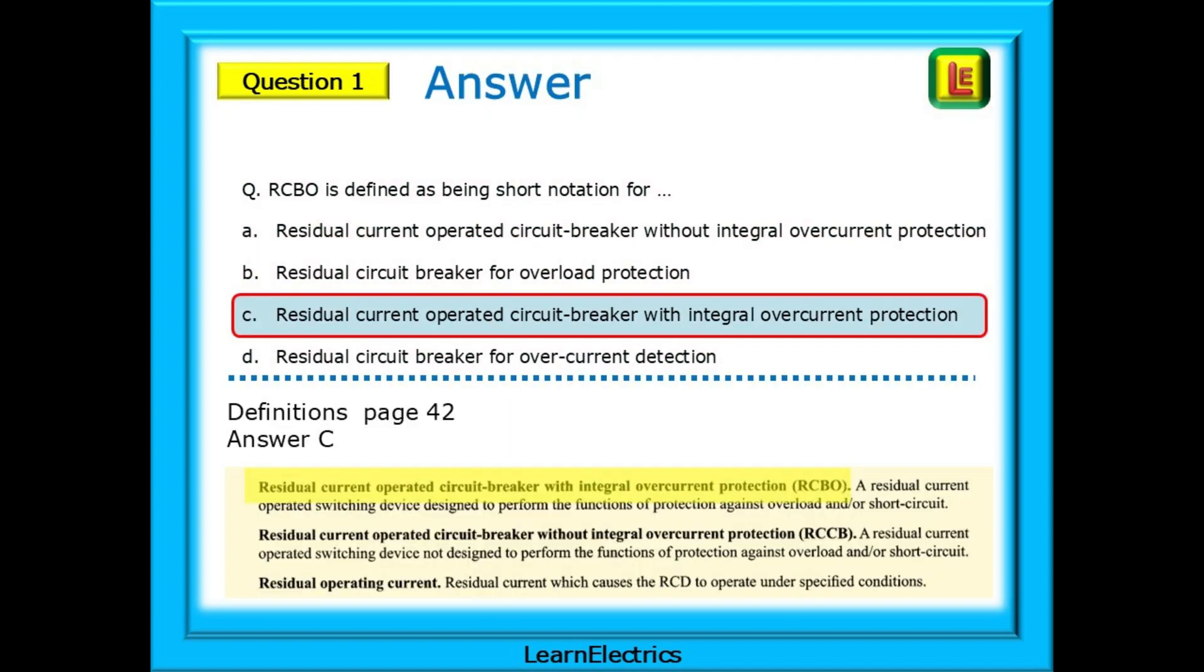The correct answer is C, found in definitions on page 42: Residual current operated circuit breaker with integral overcurrent protection. The clue is the word defined that is used in the question. The word defined should point you towards definitions part 2.